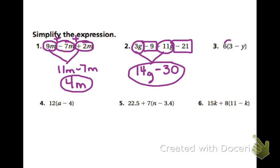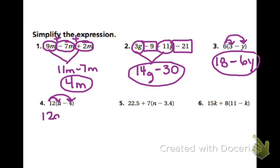In example 3, or the third problem, you'll be distributing. So 6 times 3 is 18. 6 times a negative y is negative 6y. And there's our simplified expression. For 4, again, distributing. 12a minus 48.